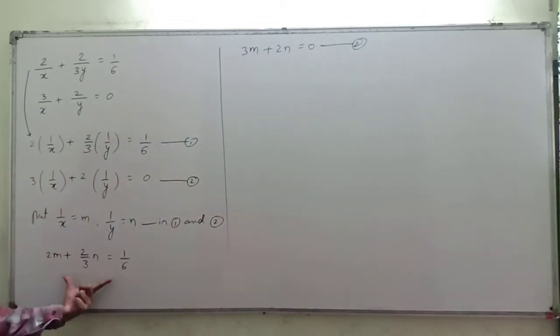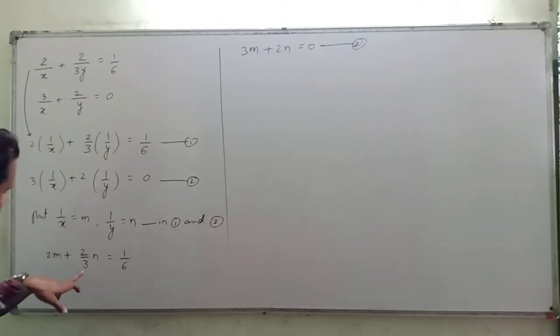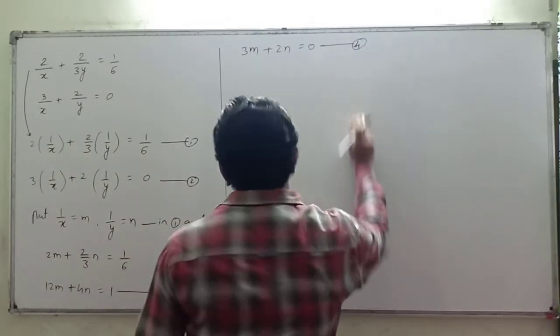Now we are going to multiply the first equation throughout by 6 to eliminate fractions. Why are we doing this? Because we don't want these fractions here. Multiplying by 6: 6·2m gives 12m, 6·(2/3)n gives 4n, and 6·(1/6) equals 1. This is equation number 3. The second equation becomes equation number 4.